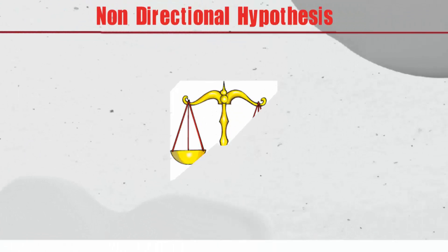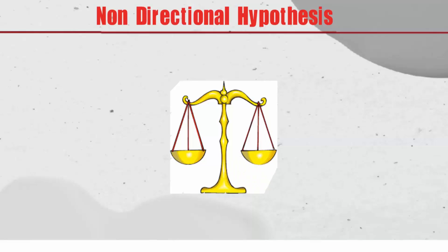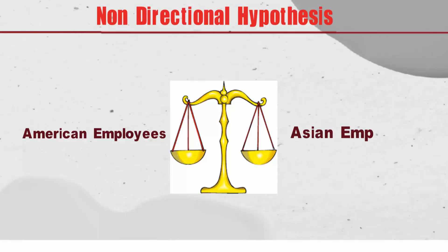In another example, we can see: there is a difference between the work ethic values of American and Asian employees. In this example, you can see that we do not know whether the work ethic values are stronger in Americans or Asians. Here the direction of the relationship is not known, so we will use a non-directional hypothesis.